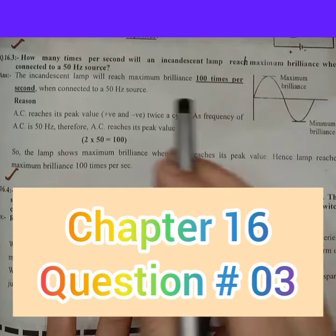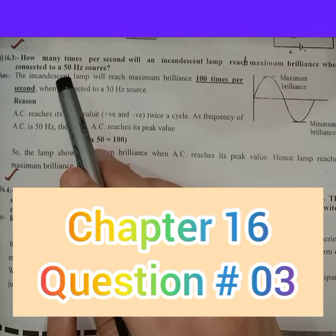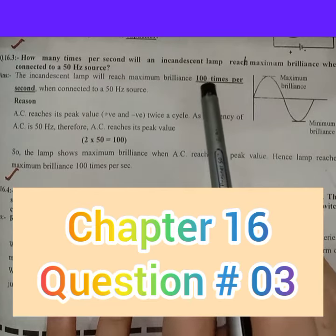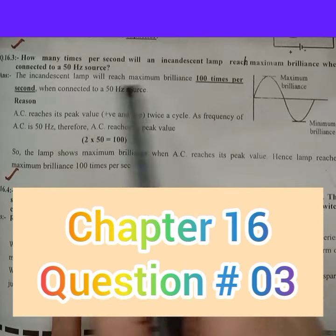So obviously, when you use a 50 Hz source, you will have 50 waves. And if you multiply 50 by 2, you will have 100 times per second. You will get maximum brilliance.